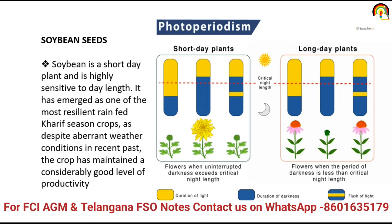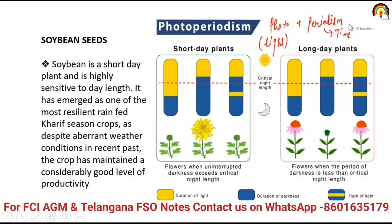What is a short day plant and what is a long day plant? Before understanding this topic, we have to understand what we mean by photoperiodism. Photoperiodism is made up of two terms: photo plus periodism. Photo means light and periodism means time. On the basis of photoperiodism, there are short day plants, long day plants, and day neutral plants. Short day plants require more dark condition or night time and less light condition.